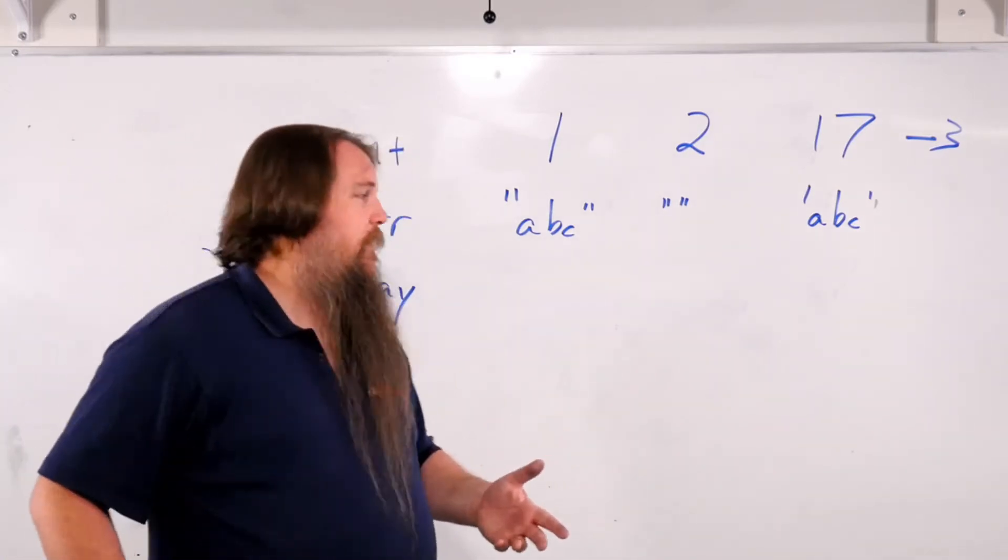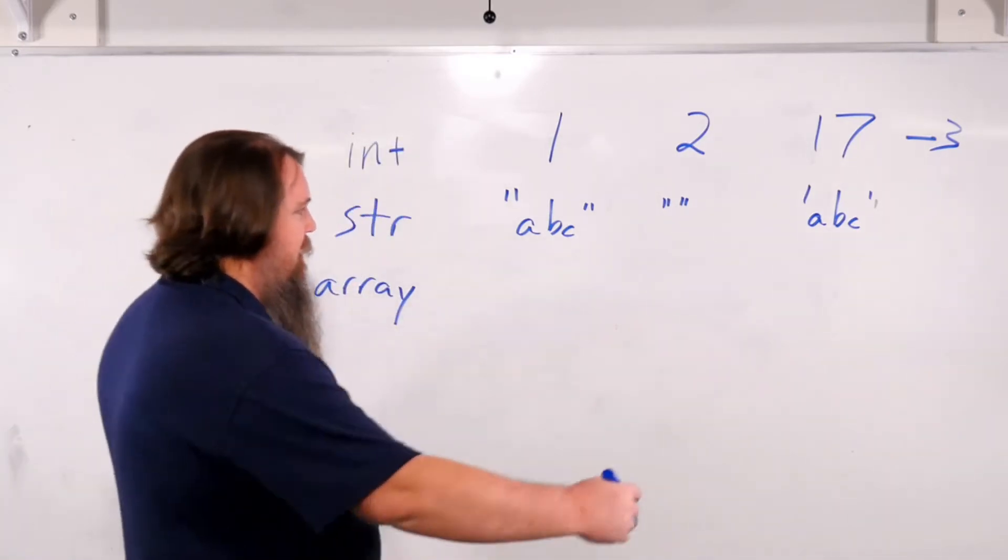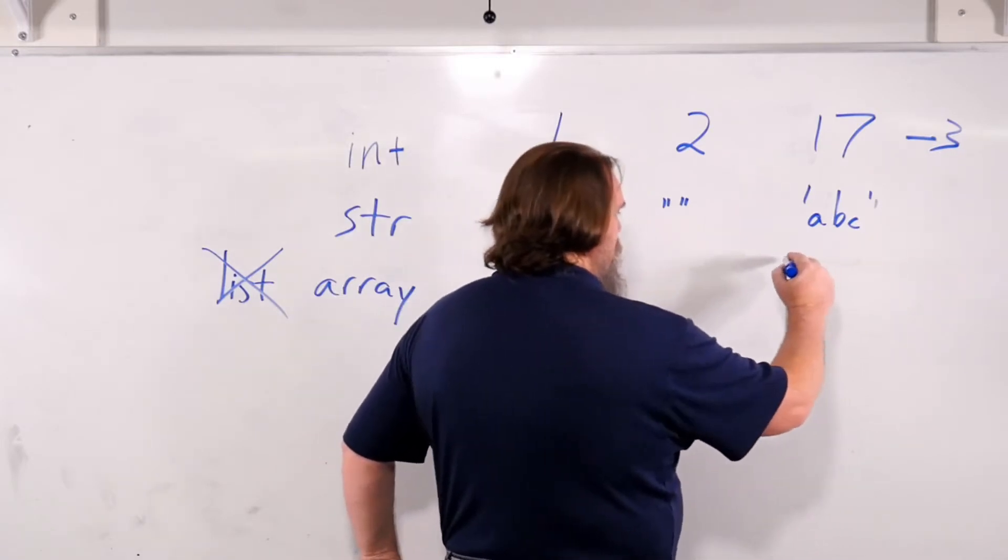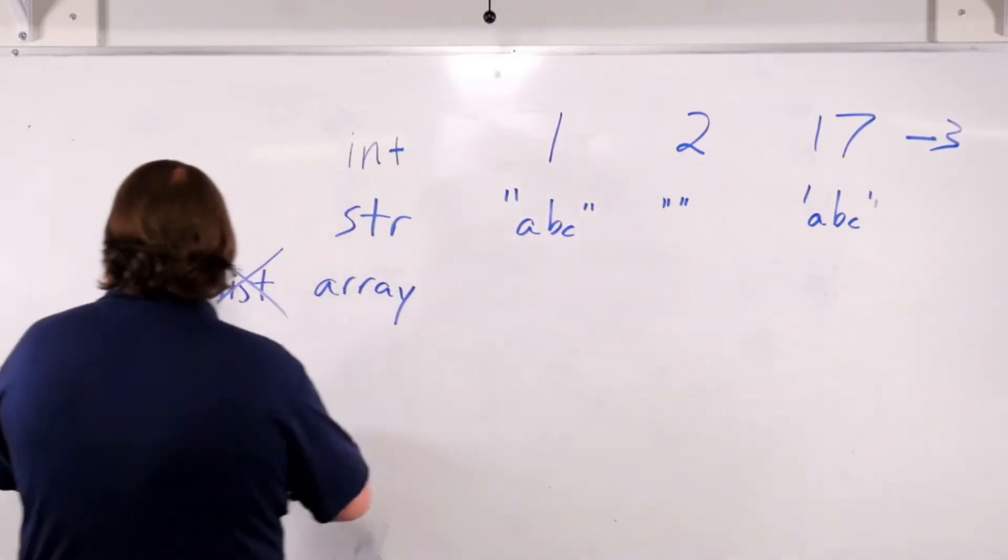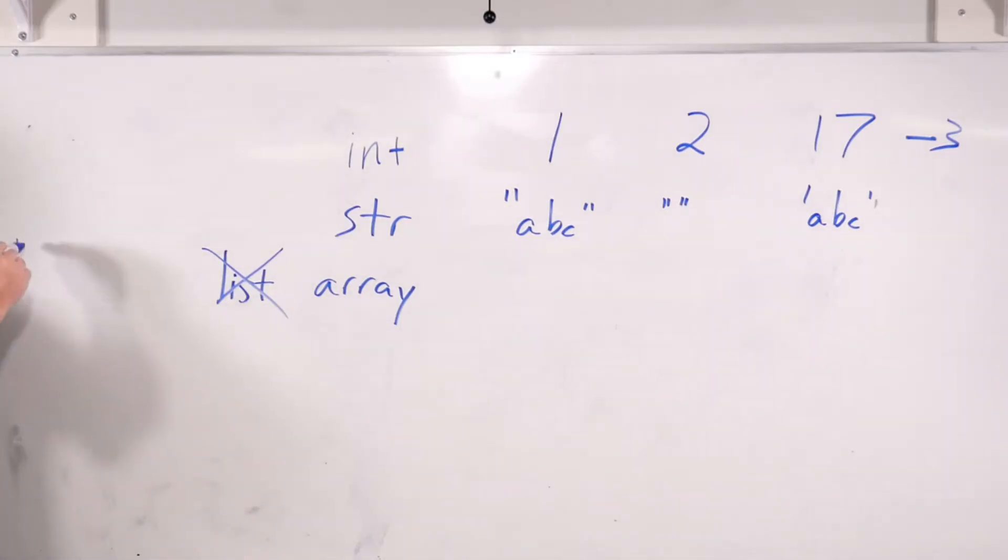Now what is an array? Well, an array is, I shouldn't put this over here where it looks like it's part of the syntax. I'll draw it over here. An array is a line of boxes all in a row that can hold various values.